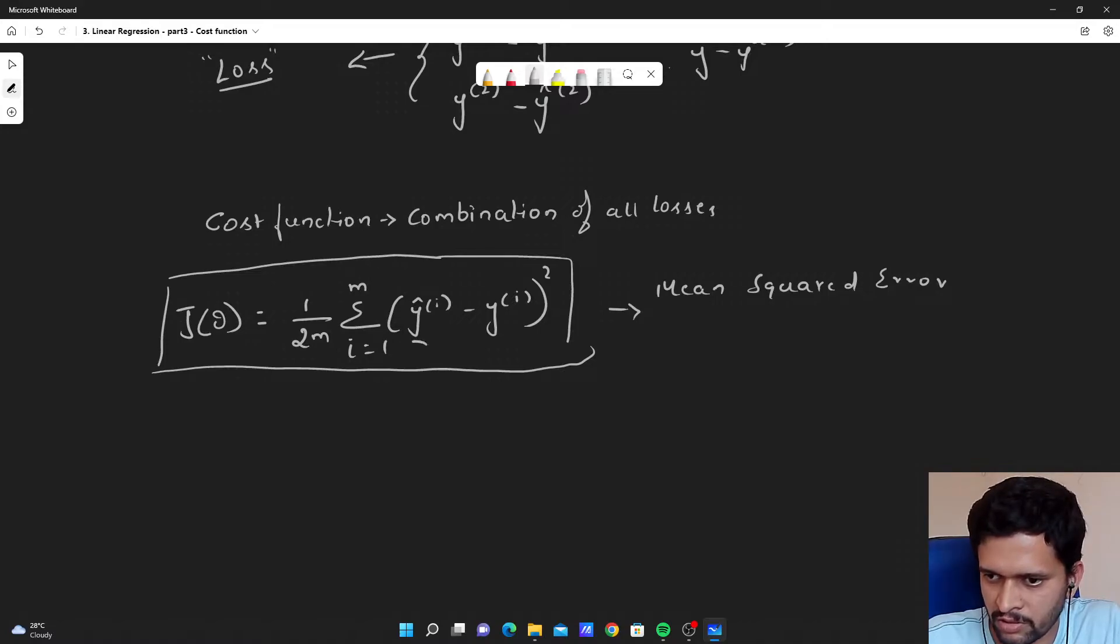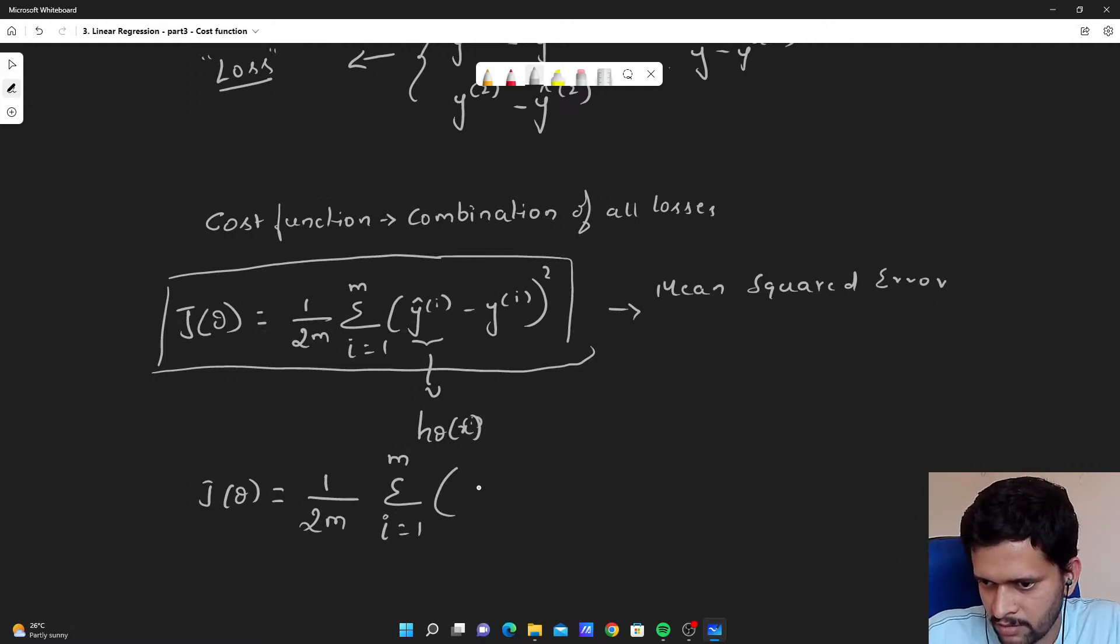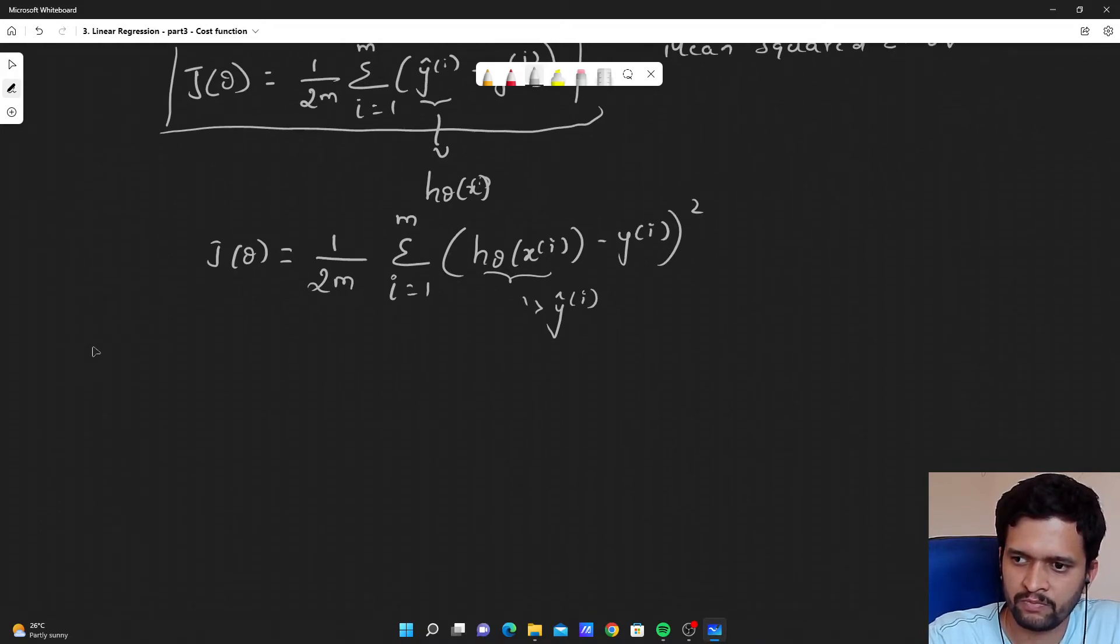If you substitute the value of y hat like hypothesis, you can either write it as j of theta is equal to 1 by 2m, summation of i is equal to 1 to m. Then instead of y hat, I will say h theta of x i minus y i whole square. Here this is y hat of i. This is our predicted value.